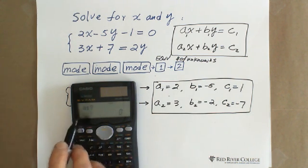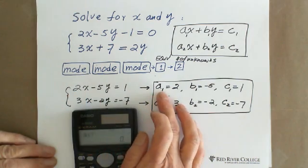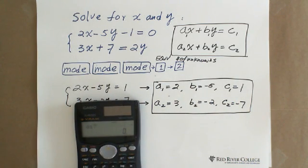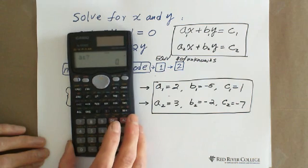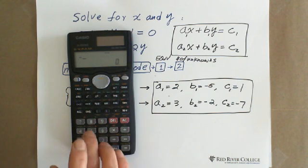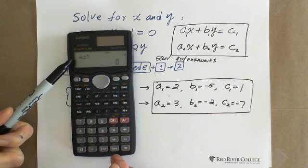Then you hit the 2. They ask you what A1, because you already wrote the standard form with A1, B1, C1. You just enter 2. A1 is 2, equal. B1 is negative 5, equal. C1 equals 1.